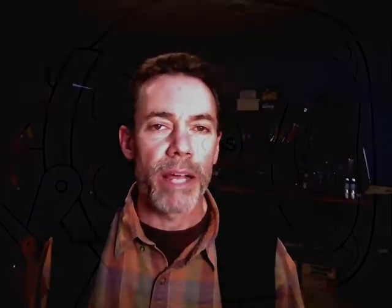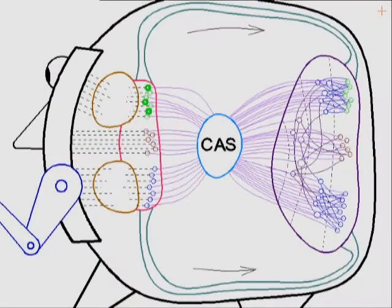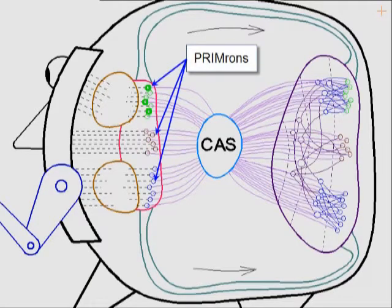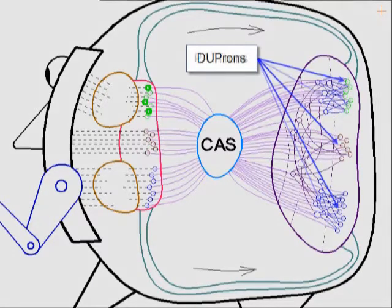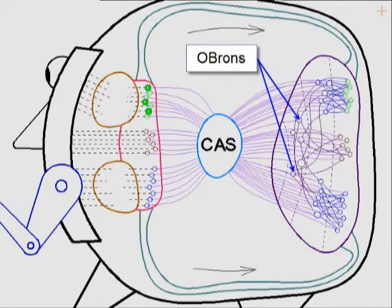In the last video, I presented and described the major contributing elements of my scheme. These consisted of Primrons, Duprons, Patrons, and Abrons. And we basically showed how memories are created.